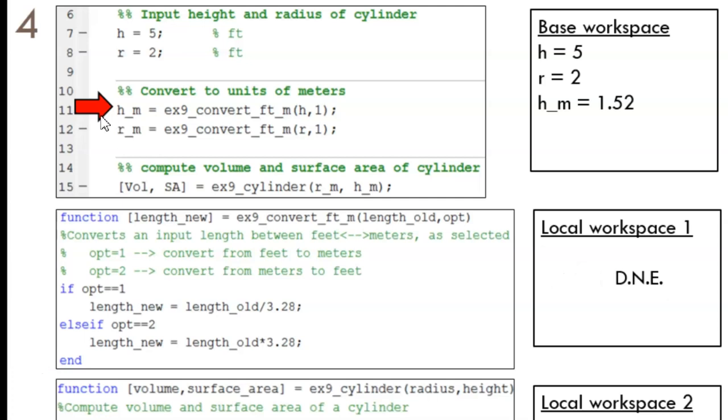When we do return, the function's workspace disappears and the base workspace has the variable hm up here, with 1.52 copied into it. In short, we got what we needed from the function.